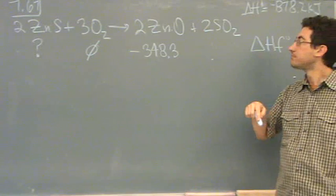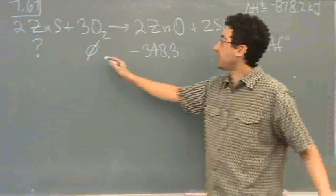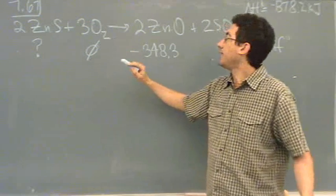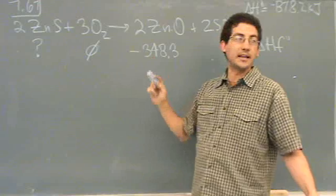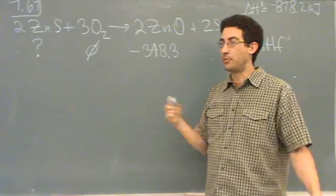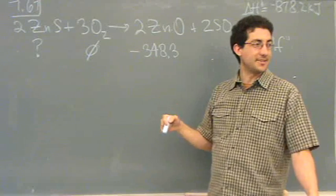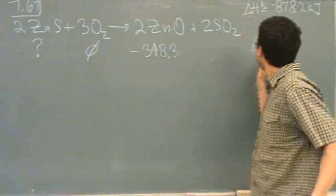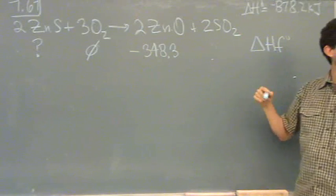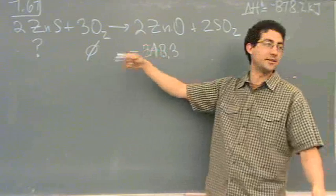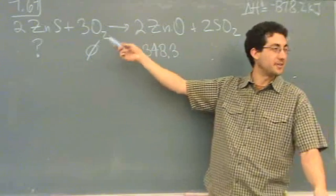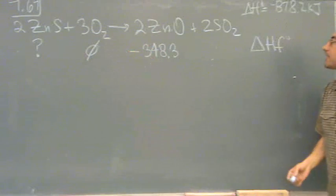And why is oxygen zero? Anything that's in its elemental form - if it was born that way, it's going to be zero. The delta H of formation basically lists from its elemental form, which it already is, how much energy do you take to form it? Well, zero because that's where it starts. Gotcha.